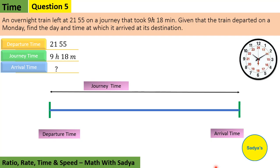So, a train left at 2155 on a journey. It means 2155 is the departure time. A journey that took 9 hours and 18 minutes means 9 hours and 18 minutes is the journey time. Find the day and time at which it arrived at its destination means we have to find the arrival time.